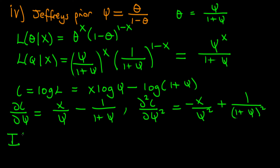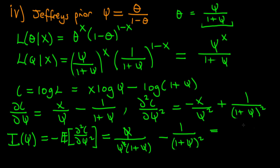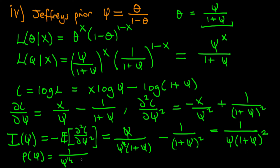The information matrix — here just a scalar — in terms of psi is equal to minus the expected value of d²L over d psi squared. The expected value of x is just theta, and theta is psi over 1 plus psi, so we obtain psi over psi squared times (1 plus psi), where the psi's cancel, minus 1 over (1 plus psi) squared, which simplifies to 1 over psi(1 plus psi). With the squared term, the Jeffrey's prior in terms of psi is proportional to 1 over psi to the power one-half times (1 plus psi) to the power one-half, written as psi to the minus one-half times (1 plus psi) to the minus one-half.